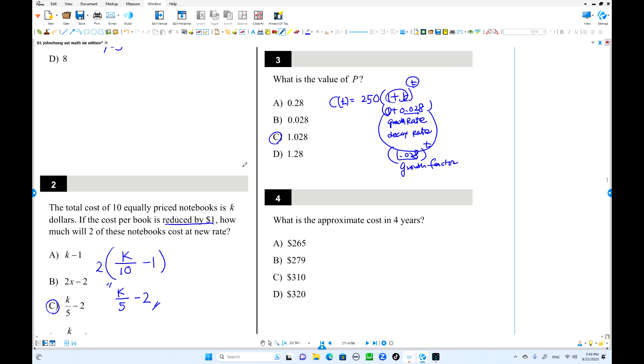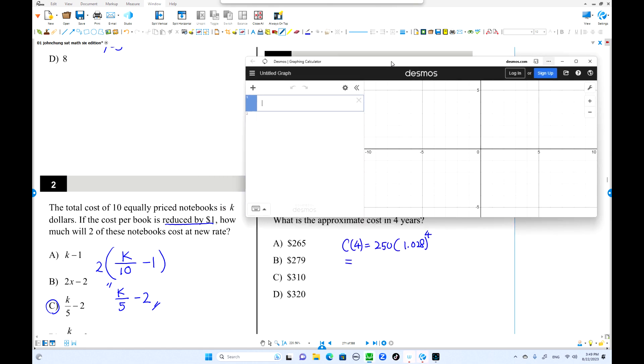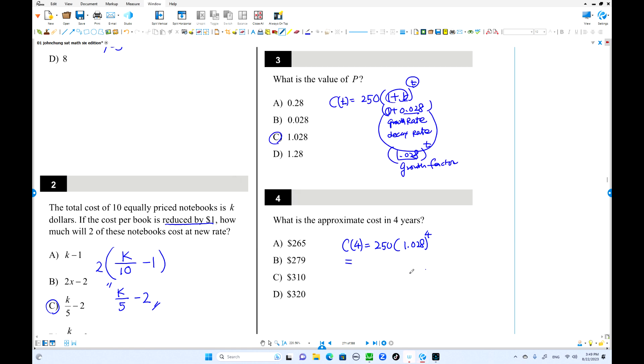What is the approximate cost for four years? So Ct equals P. Take it out. 250 times 1.028 to the power of P. We have to use a calculator. Now let's calculate. 250 times 1.028 to the fourth power. 279. Choice B is the answer.